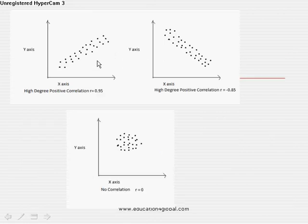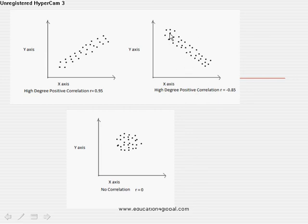In the third diagram, some dots do not follow a straight line exactly — they are just near about the straight line, and it is positive. Therefore, this is high degree positive correlation. In diagram number 4, some dots are near about the straight line and it shows negative correlation, but all dots do not follow the straight line exactly, so it is not perfect — this is high degree negative correlation. In diagram number 5, there is no relation between the dots; that is no correlation. Here the value of r is 0.